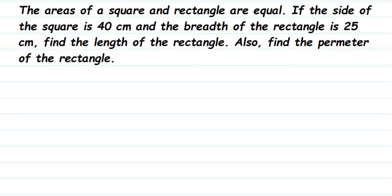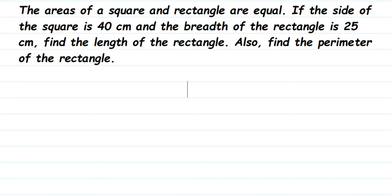Here we have an important question worth three or four marks. The question is: are the areas of a square and rectangle equal if the side of the square is 40 centimeters and the breadth of the rectangle is 25 centimeters? Find the length of the rectangle and also find the perimeter of the rectangle. So they are asking two things — one is to find out the length, and second is to find out the perimeter of the rectangle. They have given that the area of the square and rectangle are equal.